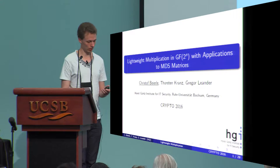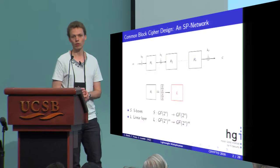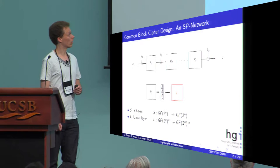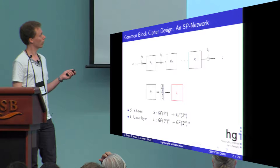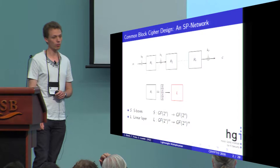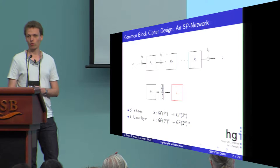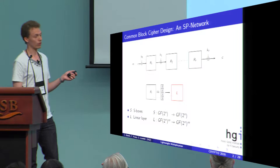You probably all know the common block cipher design of a substitution permutation network, which is based on a round iterated key alternating cipher. Every round consists of an S-box layer, which is made up on the parallel application of n-bit S-boxes, followed by a linear layer for mixing the outputs of the S-box over the whole state.